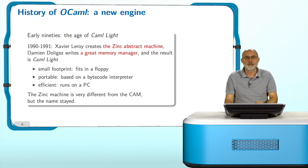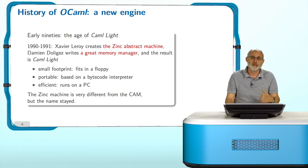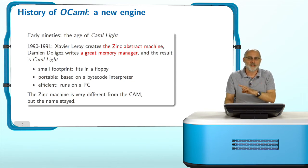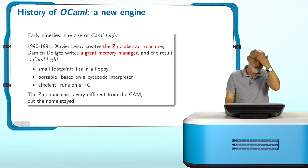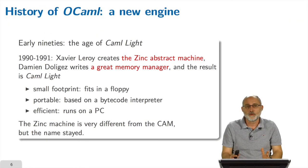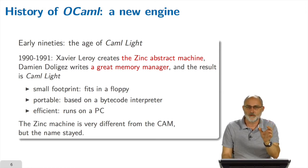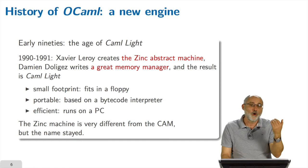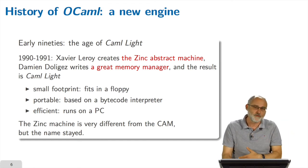In the early 1990s, some game-changing events occurred. This is really the age of what is called CAML light, as opposed to the old CAML which was very heavy to use. In 1990–1991, Xavier Leroy — now recognized as the leading creator of the OCaml language — designed another abstract machine called Zinc, which was much more efficient than the CAM for general programs. Damien Doligez wrote a great memory manager. The result combined was called CAML light: small footprint, very little code, so it fit on a floppy disk. It was portable with a bytecode interpreter and could run on any machine — even a basic PC of that era, which had far less power than today's cell phones.